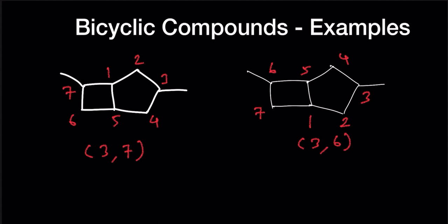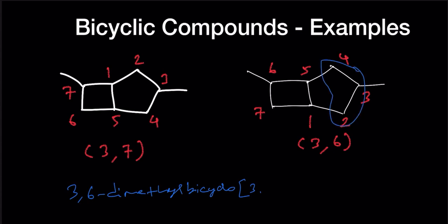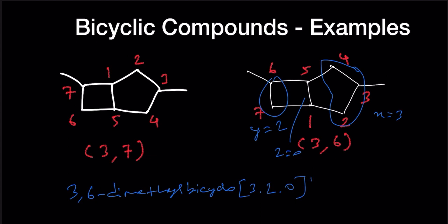So the IUPAC name is going to be 3,6-dimethylbicyclo. Then 3, because we have 3 carbon atoms here — so the value of x is 3. Then 2, because the value of y is 2. And no carbon atoms because it's a fused one, so the value of z is 0. Total 7 carbon atoms, so it is heptane.